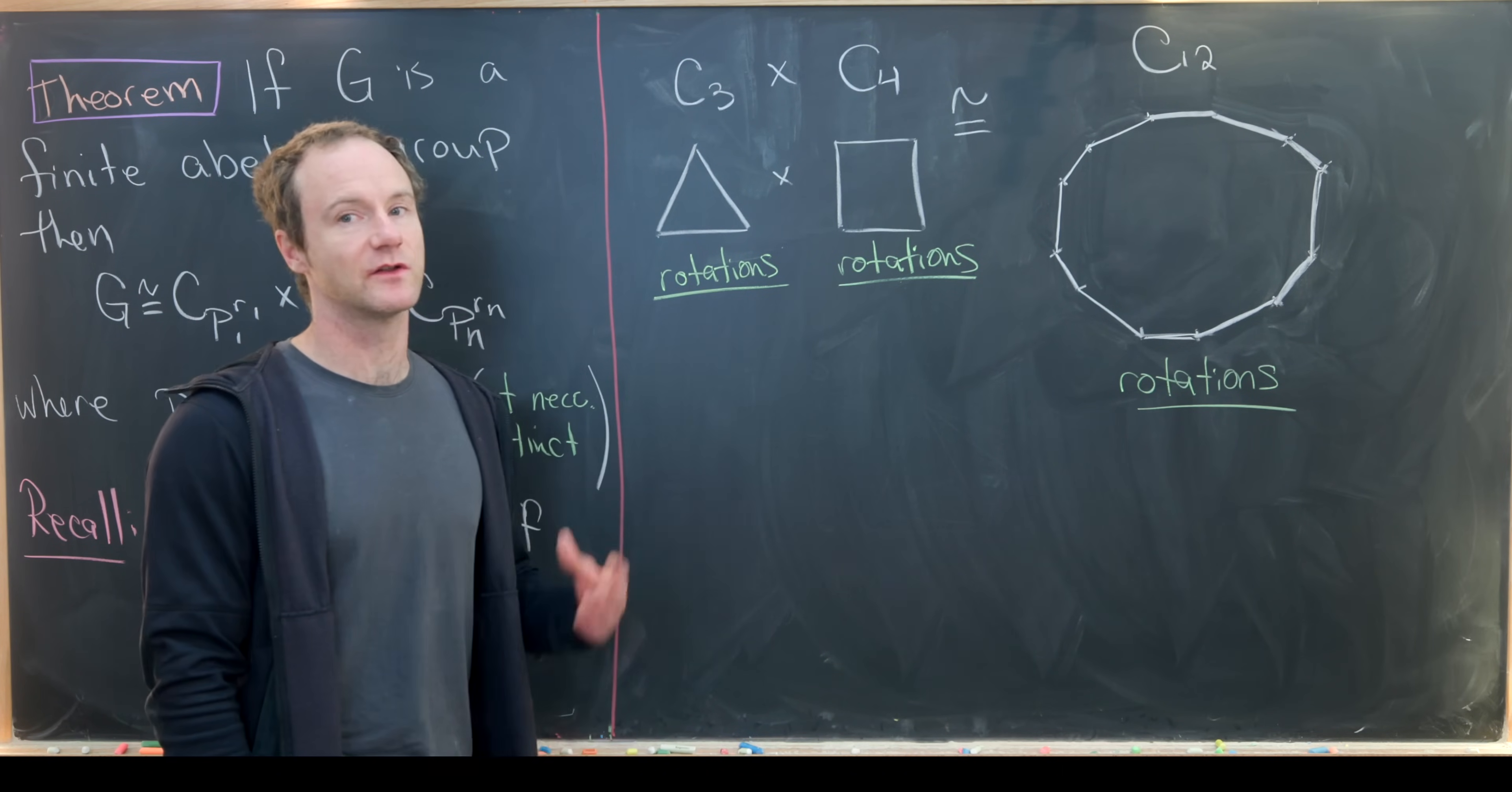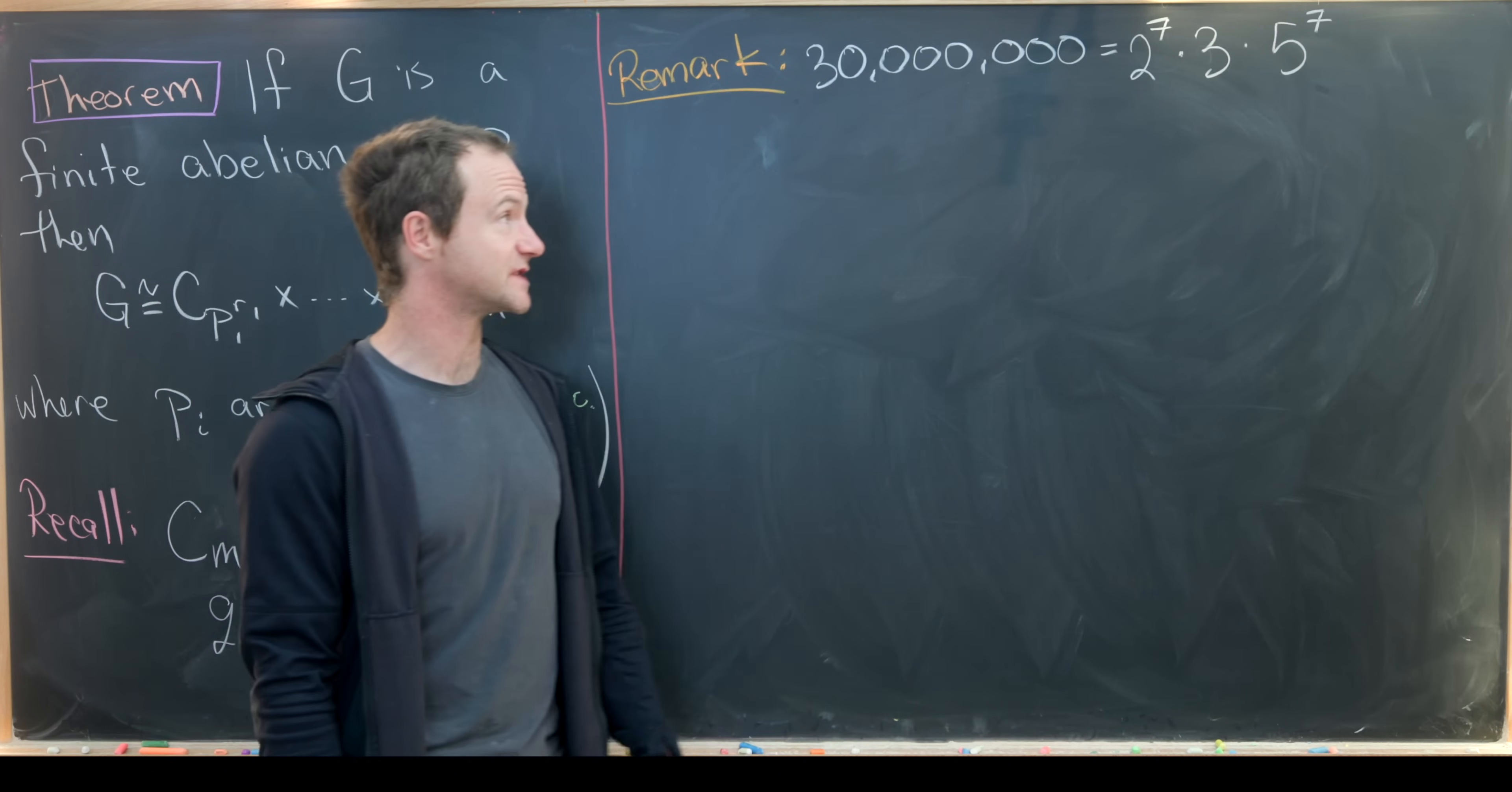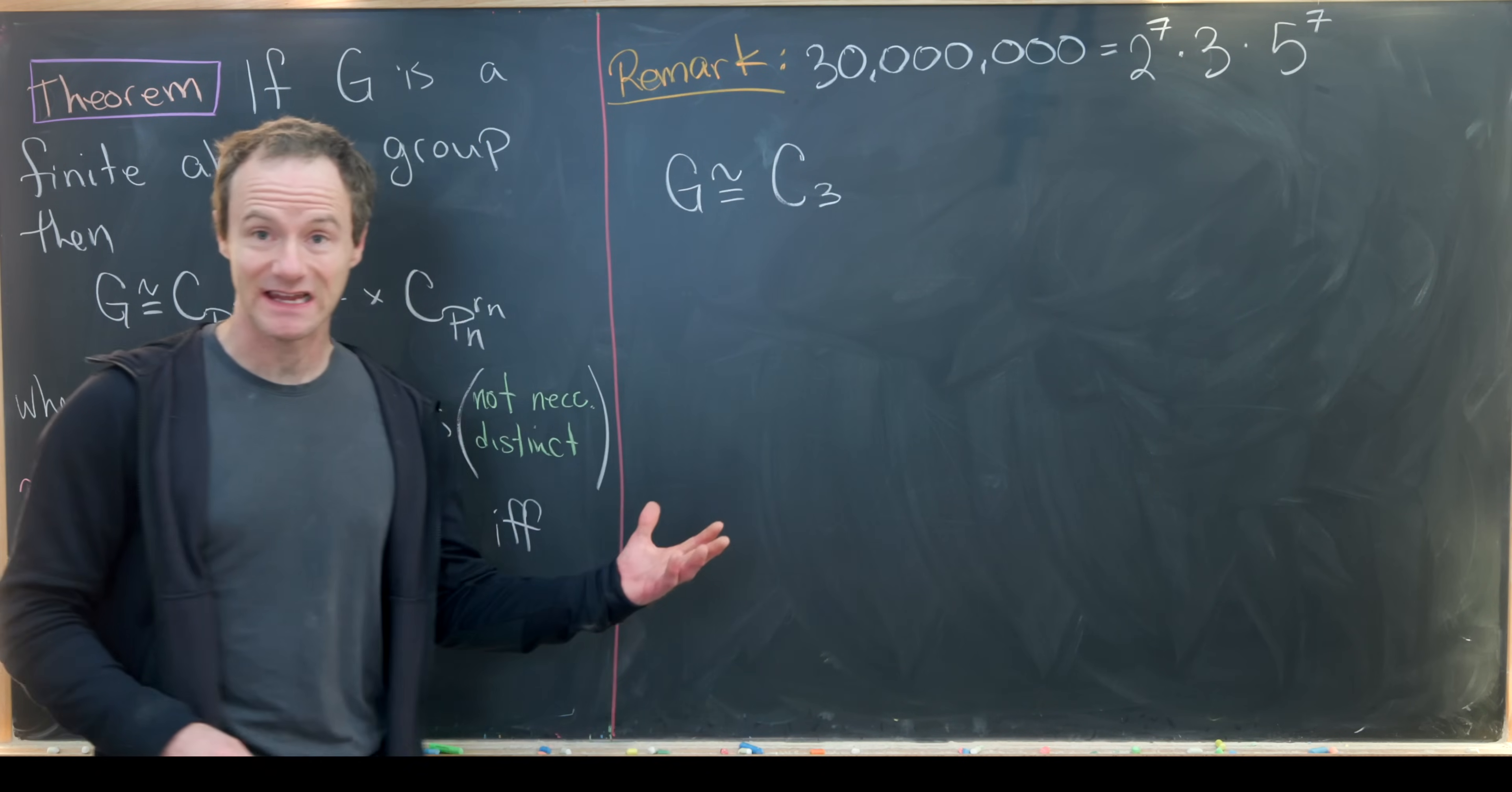So now we're finally ready to look at the number 30 million. In order to look at finite groups of order 30 million, we need to know its prime factorization. A pretty easy calculation shows that 30 million factors into 2 to the 7th times 3 times 5 to the 7th. Now if we've got a group of order 30 million, we can apply this to see that group has the form C3 cross H2 cross H5.